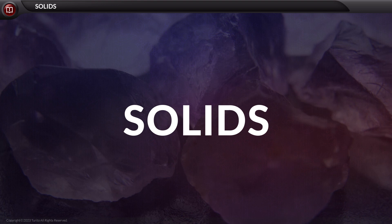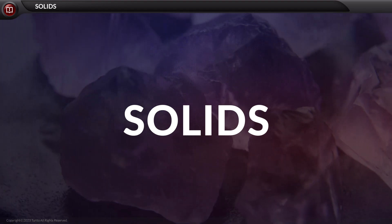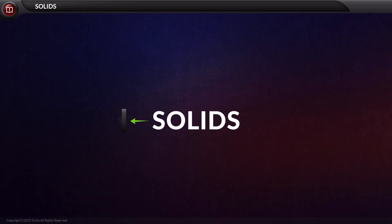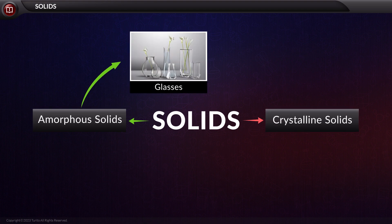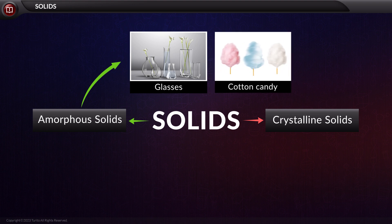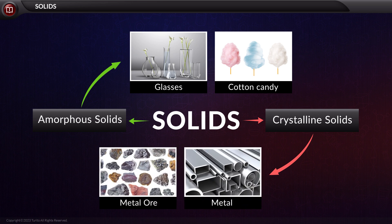Do you know how we classify solids? Solids are basically divided into two types: amorphous and crystalline. Examples of amorphous solids are glasses, cotton candy, etc. When it comes to crystalline solids, any metal or metallurgy that we see around us is an example. Now, let us see these two types of solids in detail.